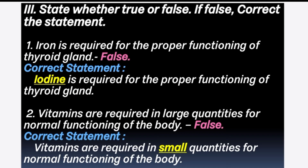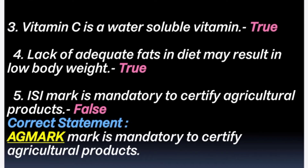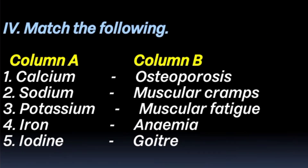Vitamins are also present in trace amounts in our food items, so we should eat more vegetables and fruits. 3rd question: Vitamin C is a water soluble vitamin. Answer is true. Vitamins B and C are water soluble vitamins; vitamins A, D, E, K are fat soluble vitamins. 4th question: Lack of adequate fats in diet may result in low body weight. Answer is true. 5th question: ISI mark is mandatory to certify agriculture products. Answer is false. Correct statement: AGMARK is mandatory to certify agriculture products.